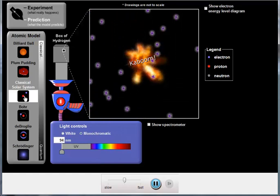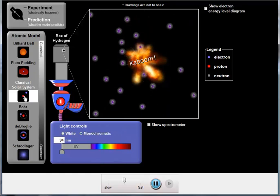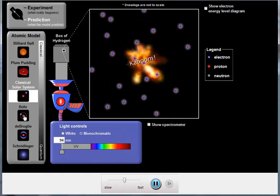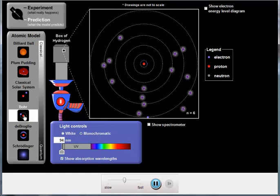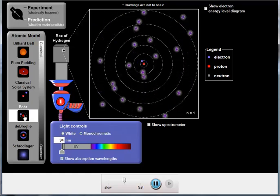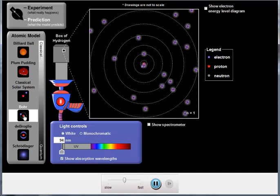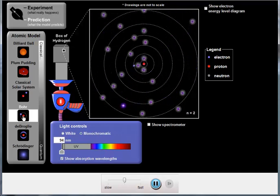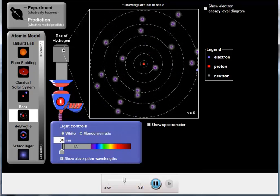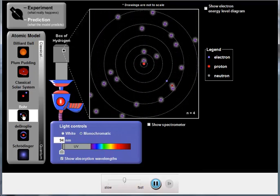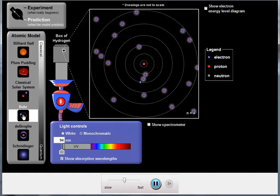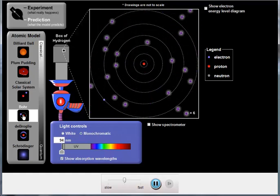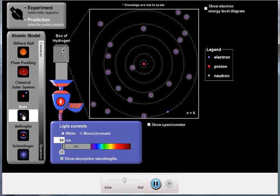It was up to Niels Bohr to deal with the problems of the Rutherford atom. And he did so by saying that the electron can only exist on certain energy levels within the atom. And that what the electron can do is bounce between levels, and it's only when moving between levels that the electron absorbed or gave up energy.